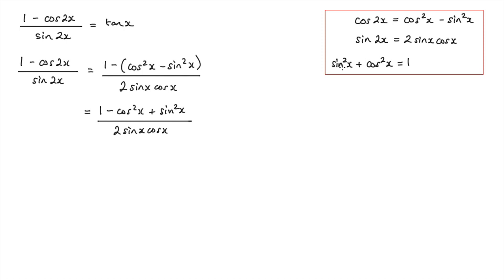Now we know that sine squared x plus cos squared x is equal to 1. So for this cos squared x here, I can actually use this rule: cos squared x equals 1 minus sine squared x. So by rearranging, cos squared x is equal to 1 minus sine squared x. Let me pop that over and replace cos squared x in our expression.